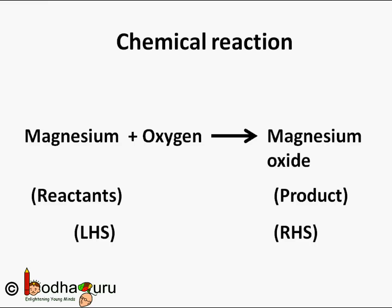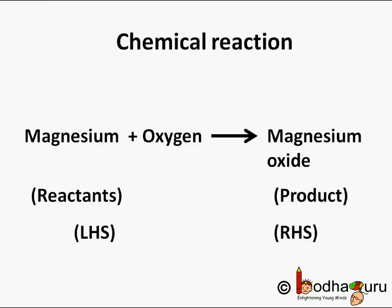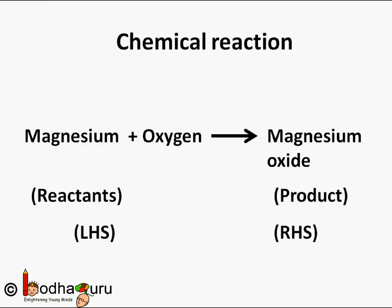If you observe, the reactants are written on the left hand side of the equation and the product formed is written on the right hand side. So, the reactants are written on the LHS with the plus sign between them. Same way, products are written on the RHS with the plus sign between them. The arrow head points towards the product and shows the direction of the reaction.